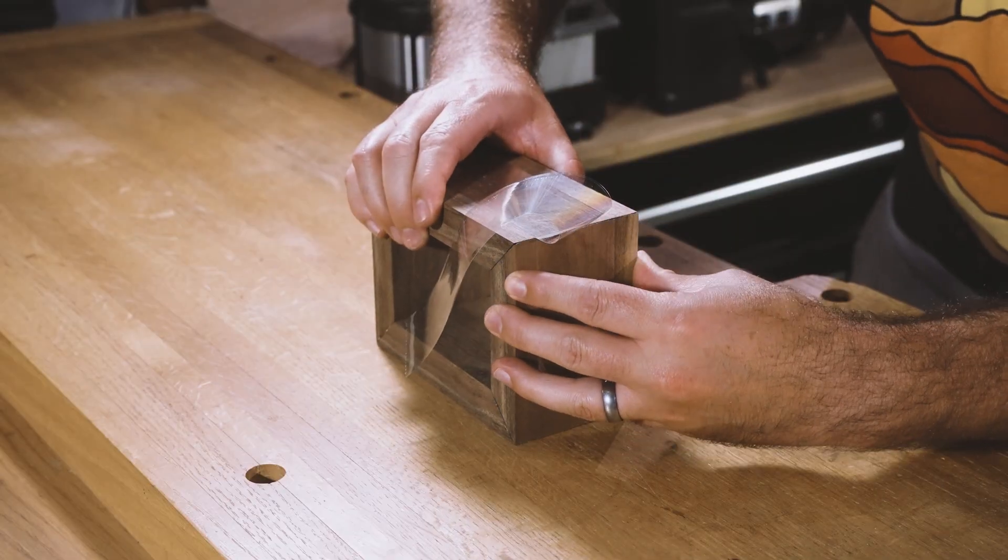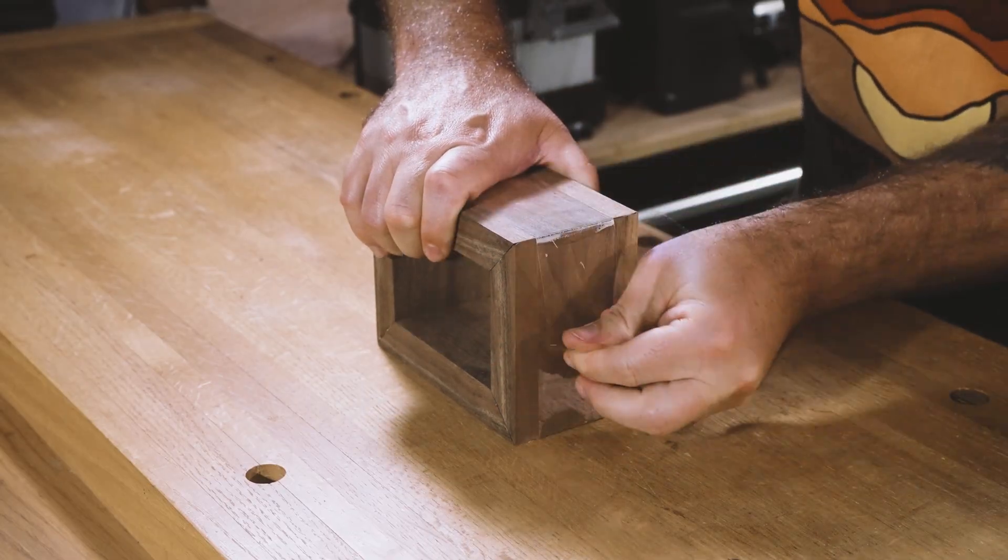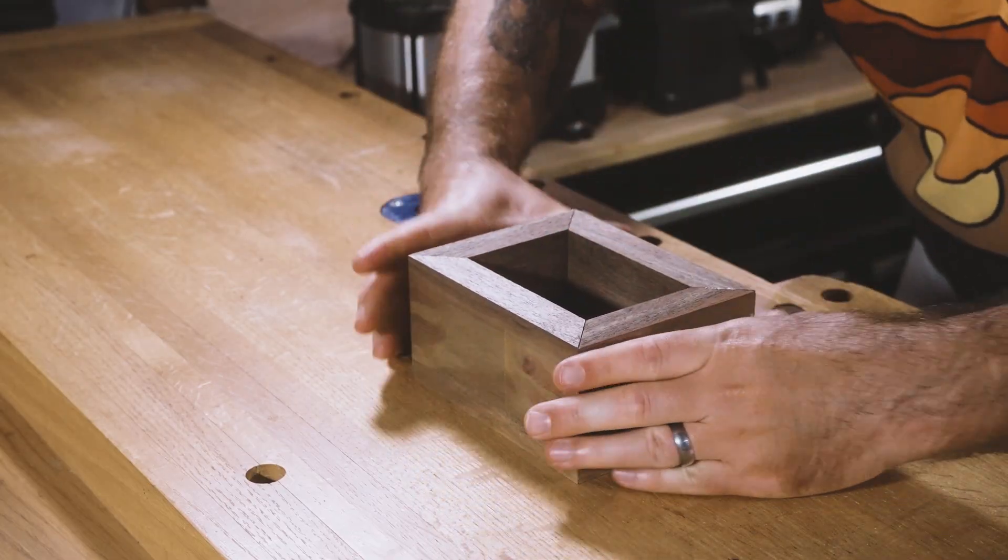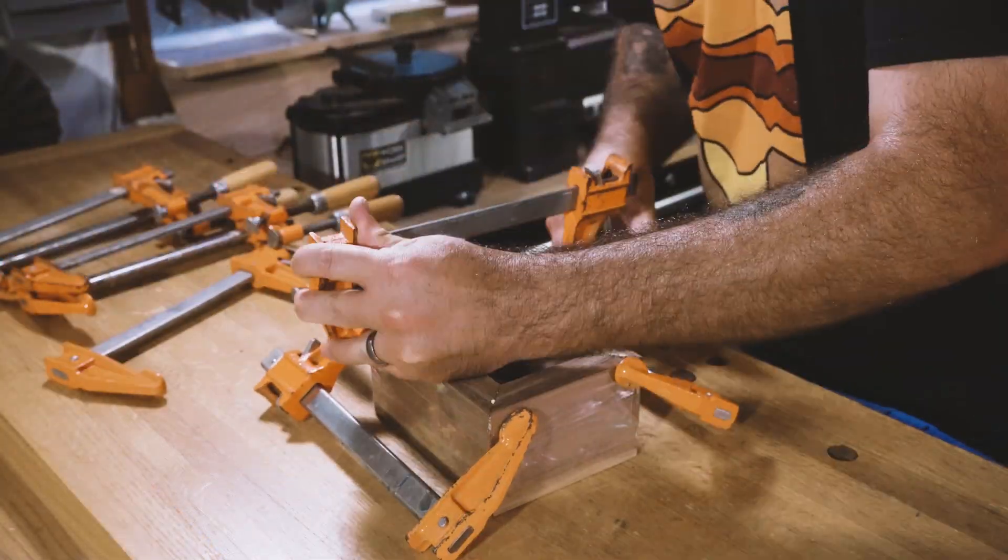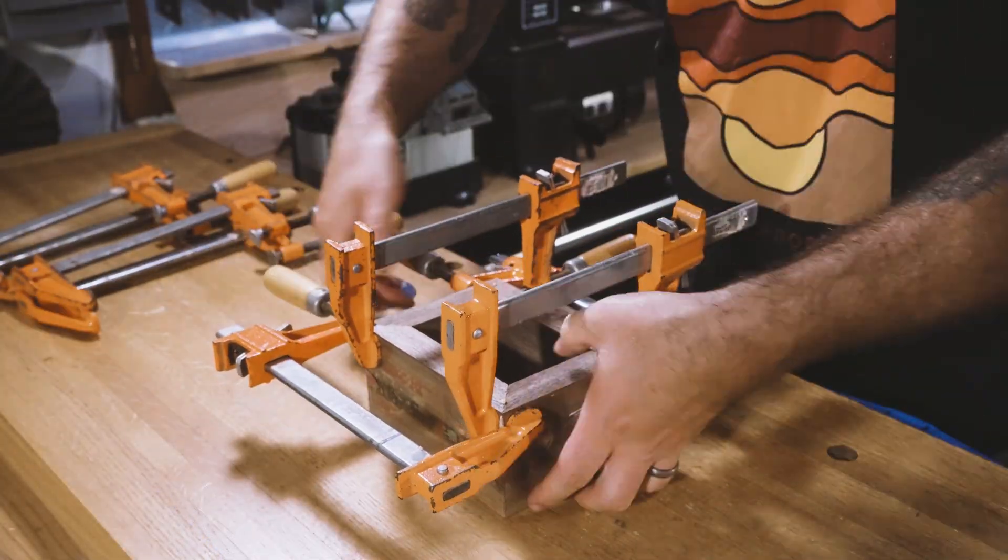This part is always so satisfying. The packing tape allows you to just roll it into the shape of a box. But I always like to add clamps as well to make sure the joinery is nice and tight.